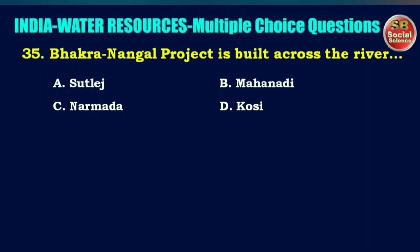Bhakra-Nangal project is built across the river — options are Sutlej, Mahanadi, Narmada, or Kosi. The right answer is option A: Sutlej.